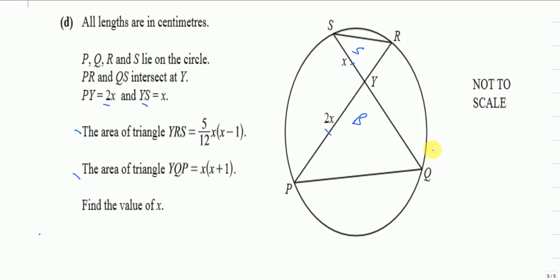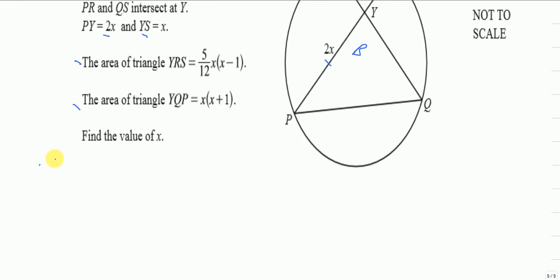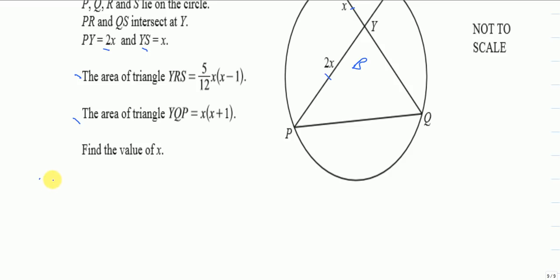The area of the smaller triangle, which is 5/12 × x × (x - 1), over the area of the larger triangle, which is x(x + 1), should equal their corresponding lengths. For the smaller one it was x, and for the larger one it was 2x.